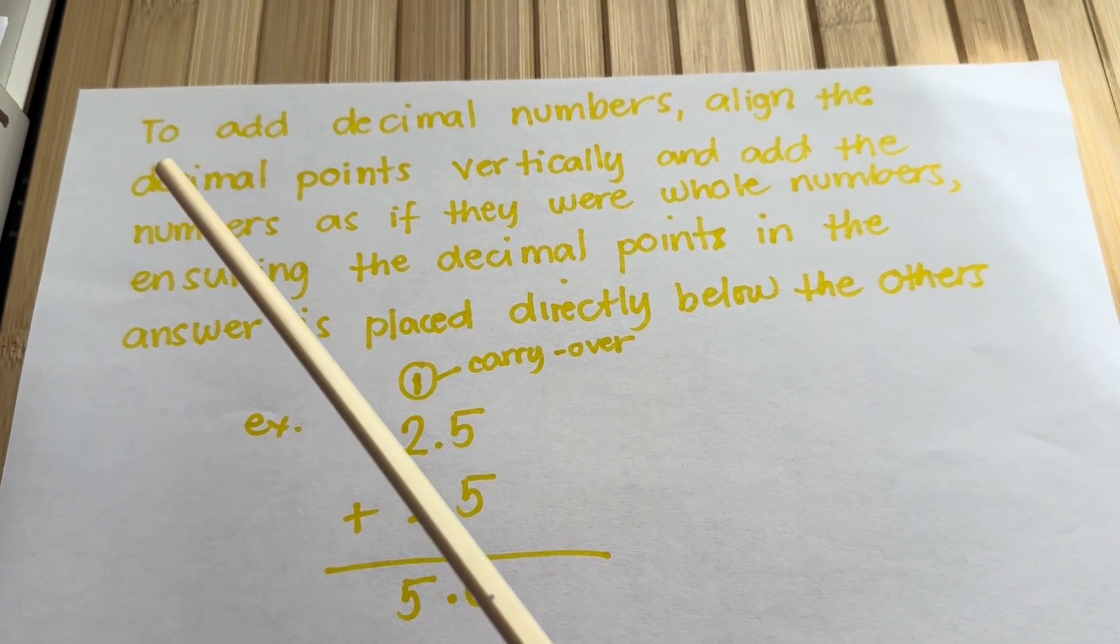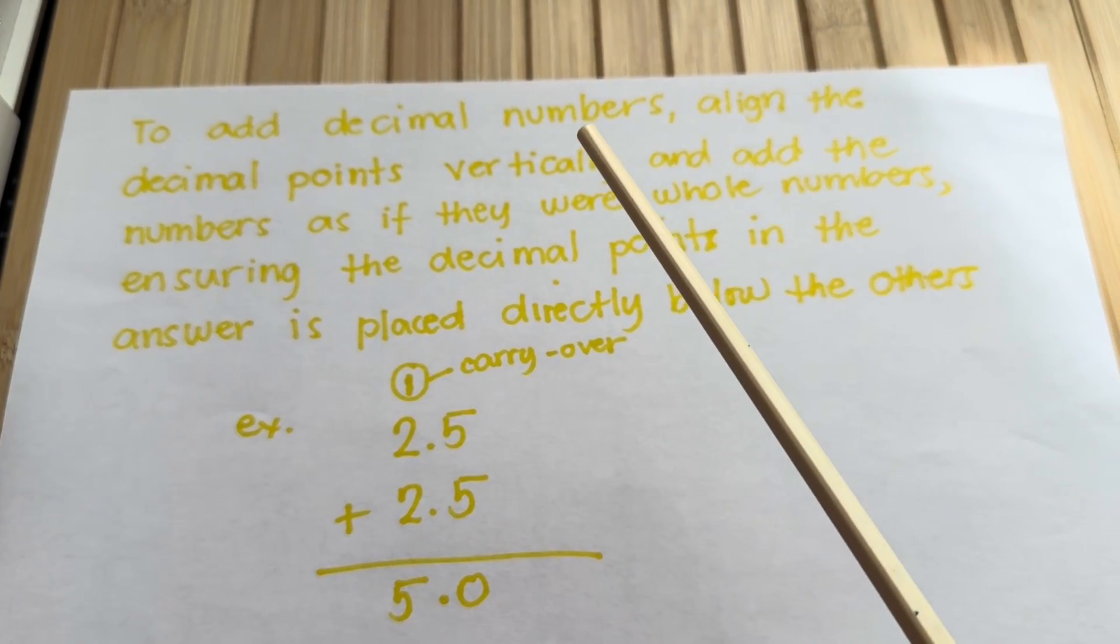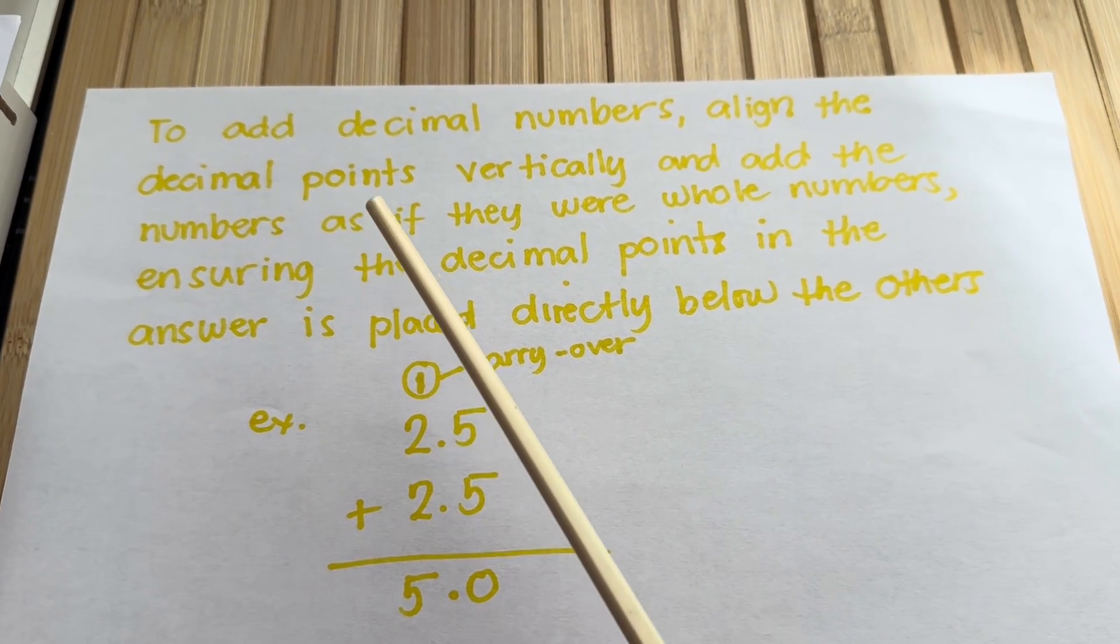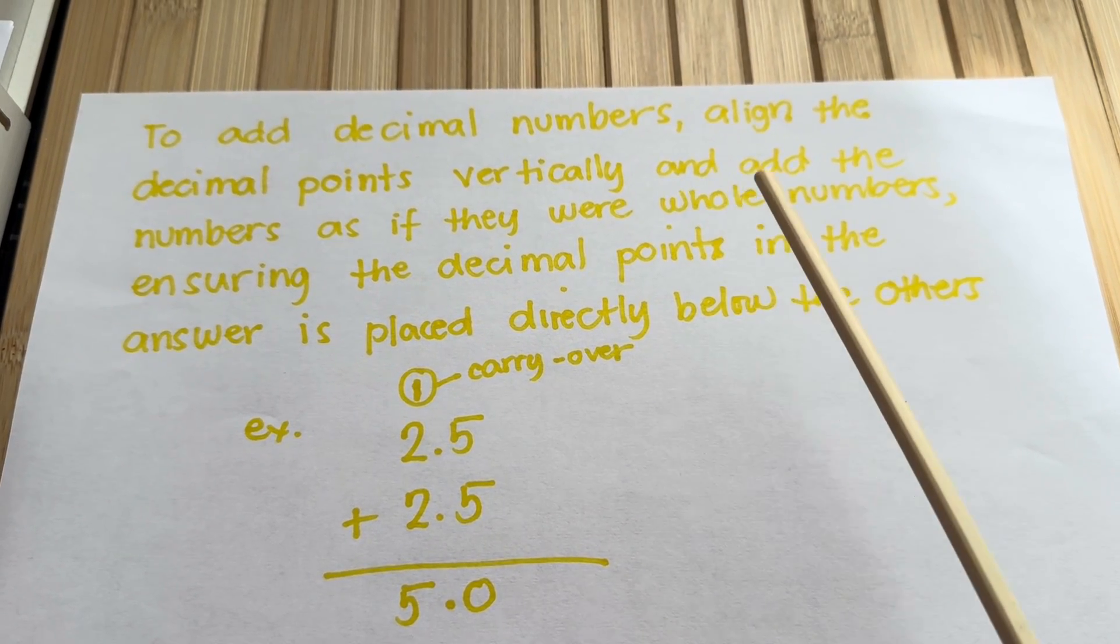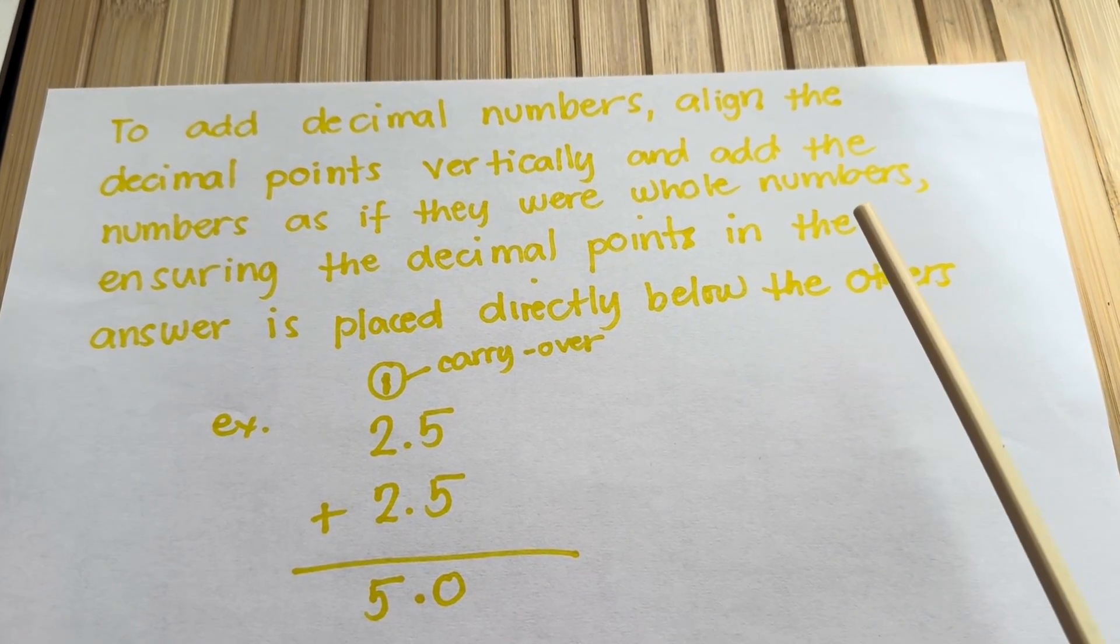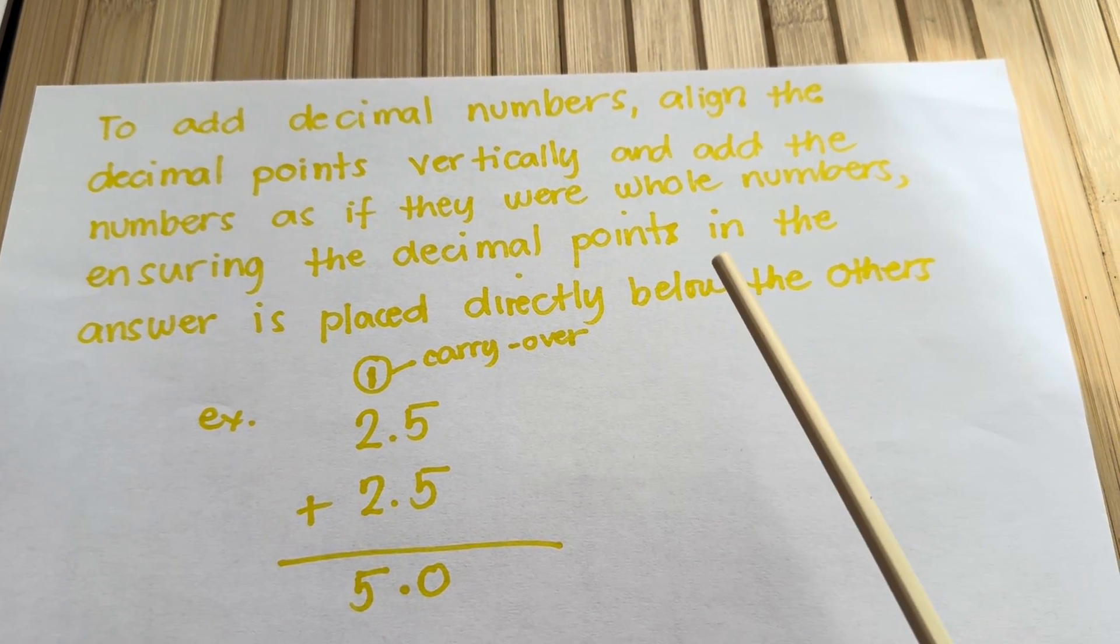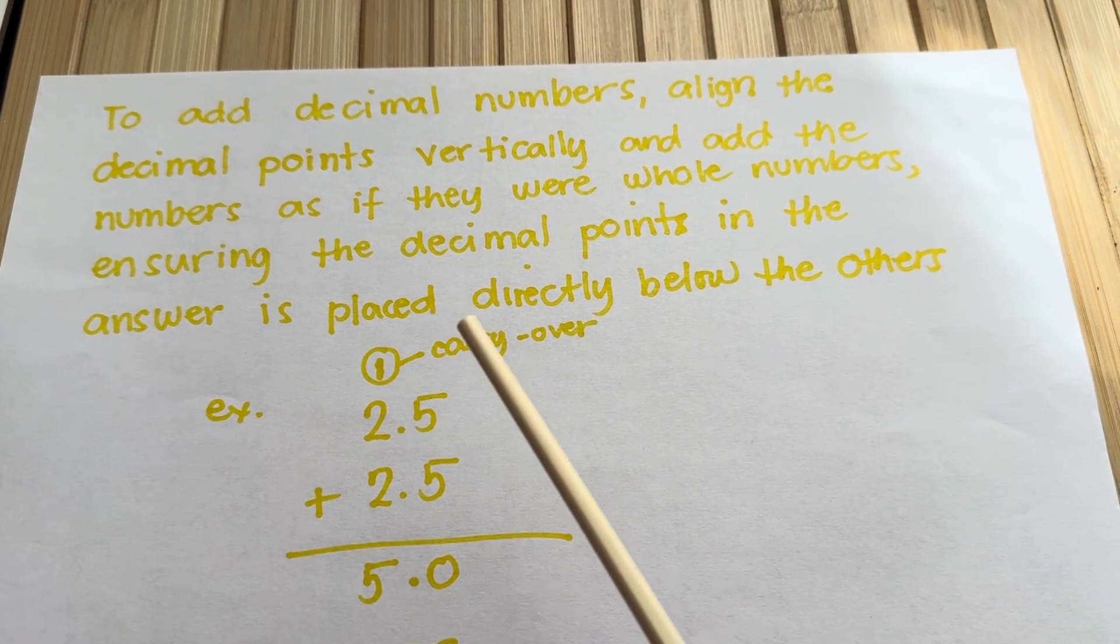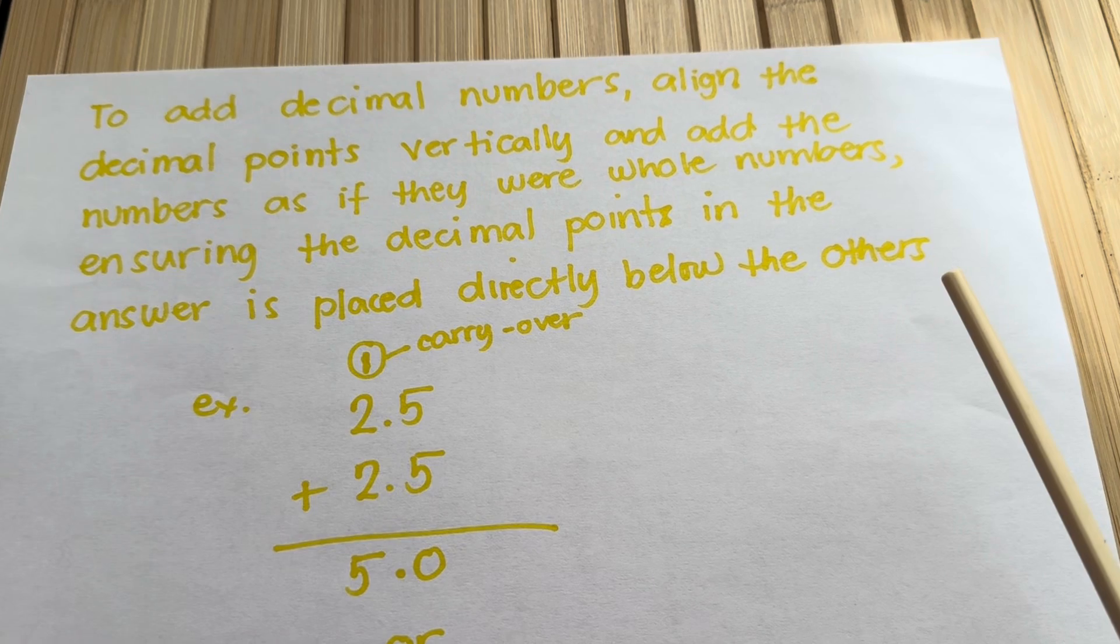Let's summarize! To add decimal numbers, align the decimal points vertically and add the numbers as if they were whole numbers, ensuring that the decimal point in the answer is placed directly below the others.